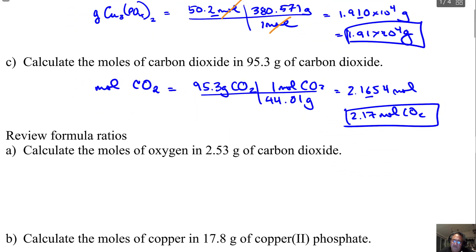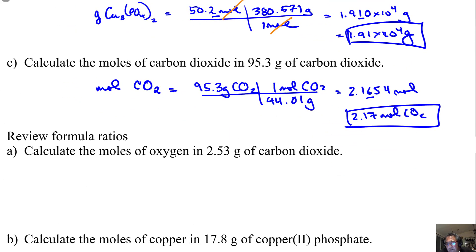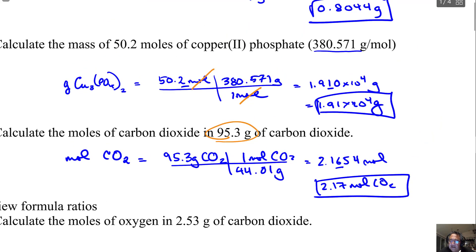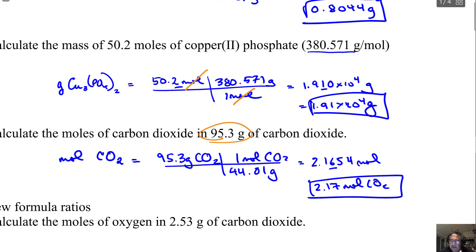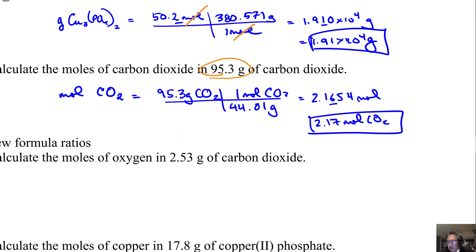Now for the moles of CO₂, I was given the grams of CO₂ and the molar mass. I wanted the grams to cancel, so I set it up so the grams were at the bottom. I was left with moles of CO₂, which was 2.1654, rounded to 2.17 because there's three significant figures in this number.